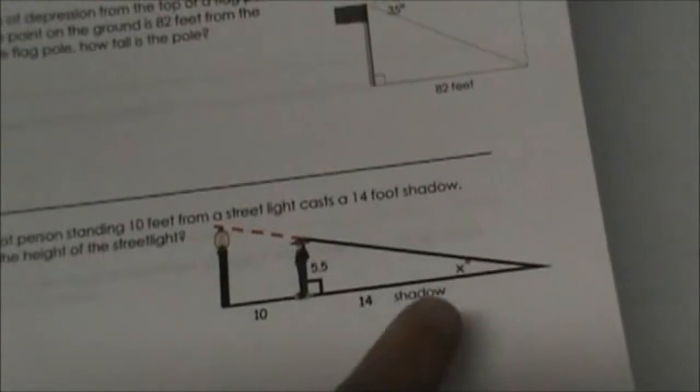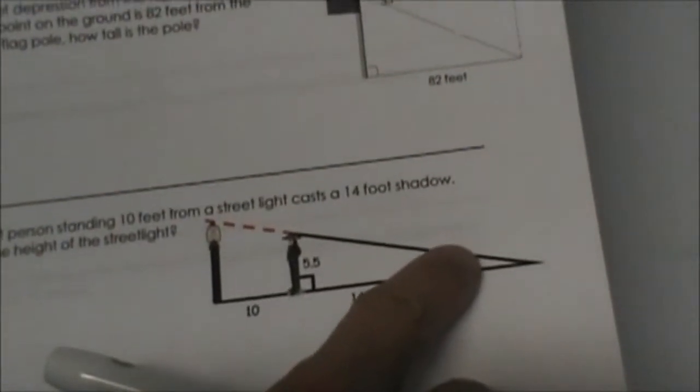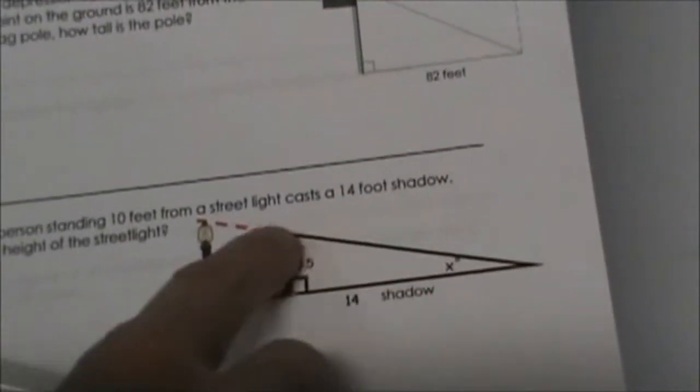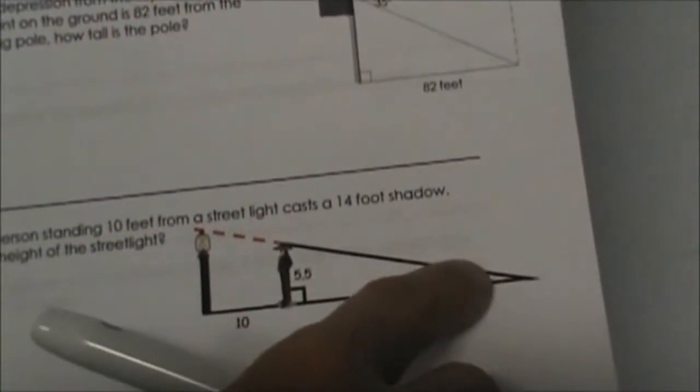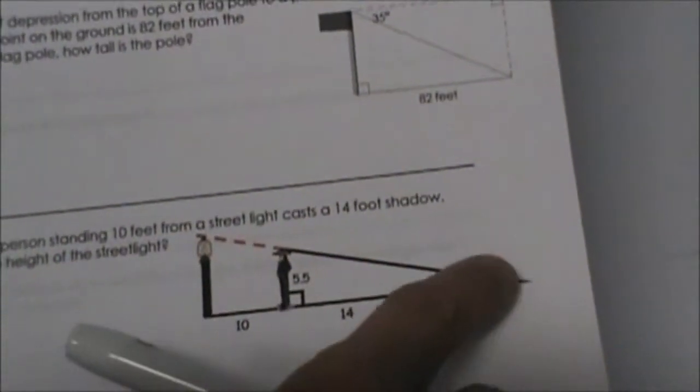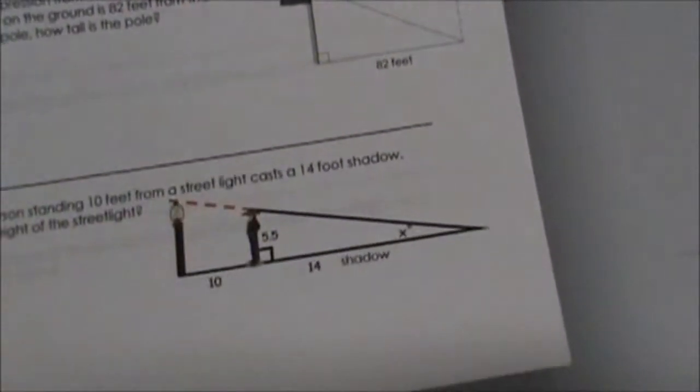So let's first figure out what this angle is. Once we figure out the angle, do you see how we have two triangles? We have a small triangle here we'll use to find x, and then we have a larger triangle here that we can use once we find x to find the height of the pole.